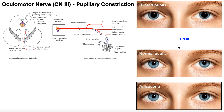One branch goes to the constrictor pupillae muscle, causing the pupil to constrict. Up here we have dilated eyes — what we'd expect to see in a sympathetic response. But the oculomotor nerve functions in the parasympathetic nervous system, so instead of dilating the eyes, cranial nerve 3 causes them to constrict back to normal. It can even constrict them further, making the pupils even smaller.